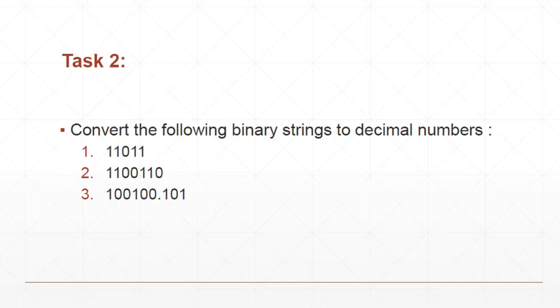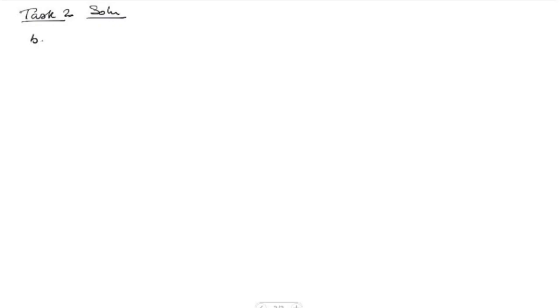Now we'll start working on task 2, which is to convert the binary strings given to decimal numbers. We have three binary strings given, one with a radix point, and we'll learn how to convert them to decimal numbers. Converting binary to decimal now.